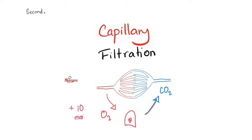The exact opposite is going to happen at the venous side. When you do the numbers, it gives you negative 10, which means blood is not leaving the capillary — blood is returning to the capillaries.